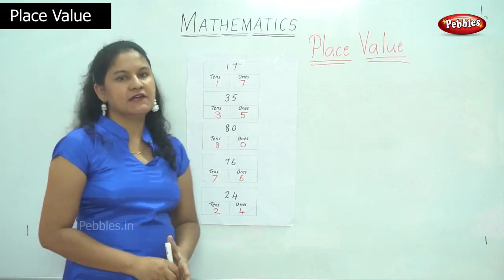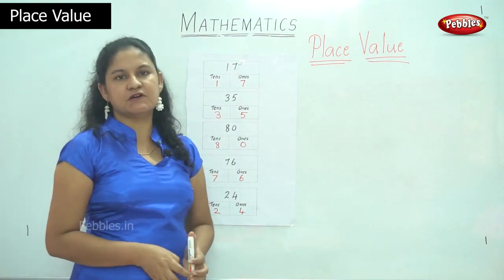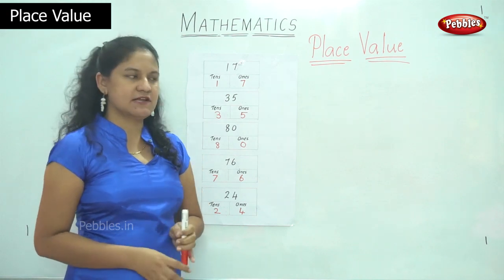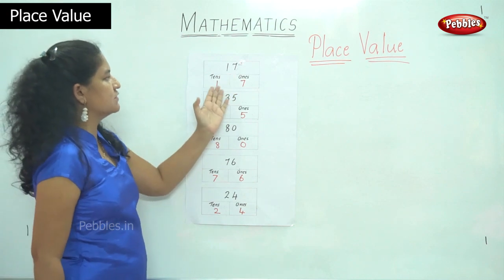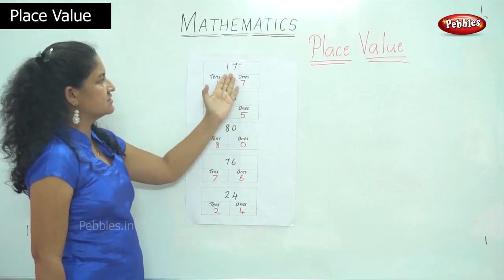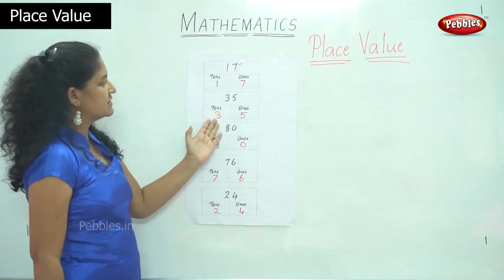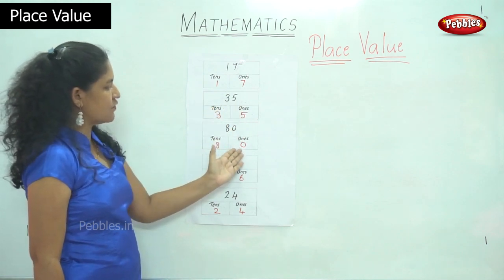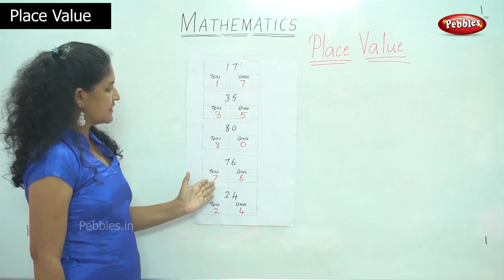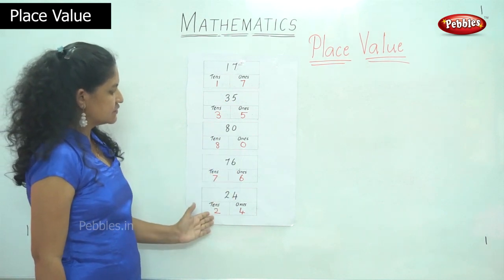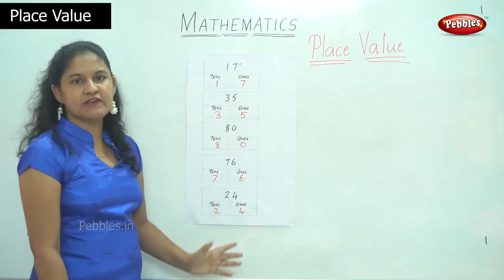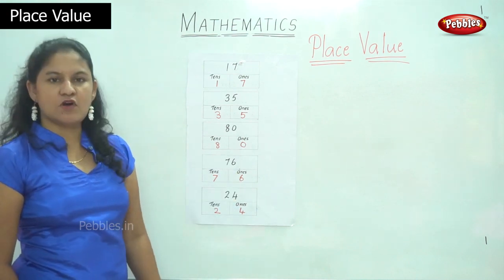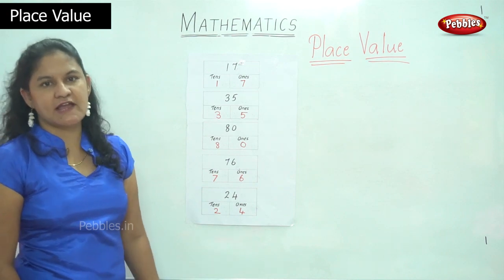By knowing the place value of each number, addition or subtraction becomes a very simple task. To recap the second set: 1 10s 7 1s is 17; 3 10s 5 1s is 35; 8 10s 0 1s is 80; 7 10s 6 1s is 76; 2 10s 4 1s is 24. This is the place value of numbers between 1 and 100.